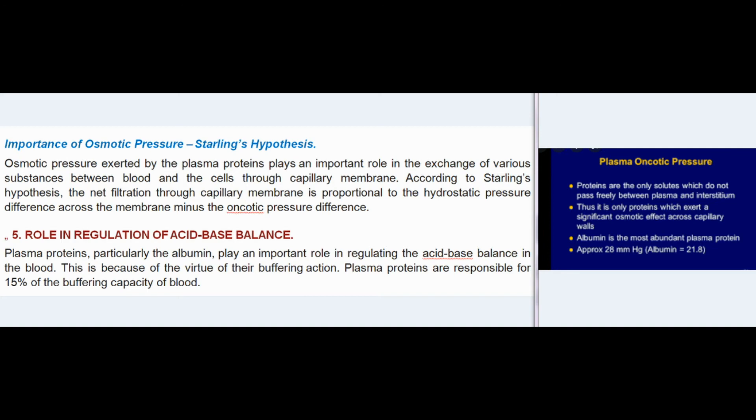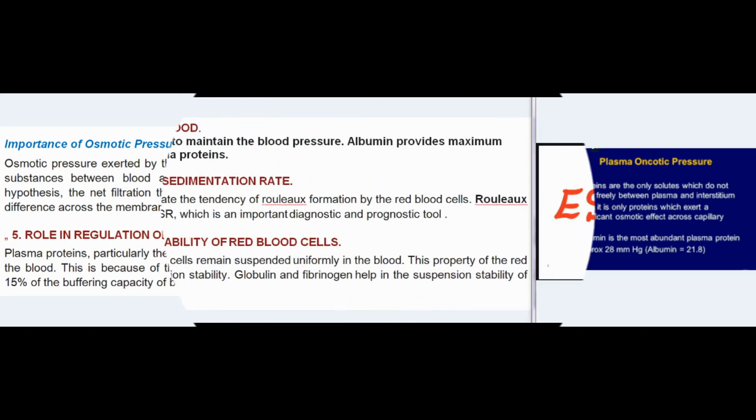(5) Role in regulation of acid-base balance: Plasma proteins, particularly albumin, play an important role in regulating the acid-base balance in the blood due to their buffering action. Plasma proteins are responsible for 15% of the buffering capacity of blood.